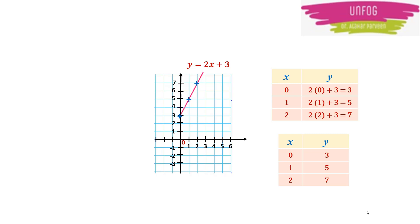We then join these three points to get one straight line. So this is the graph of y = 2x + 3 which we have plotted using these points. We can denote each point by x and y, and this is known as an ordered pair.